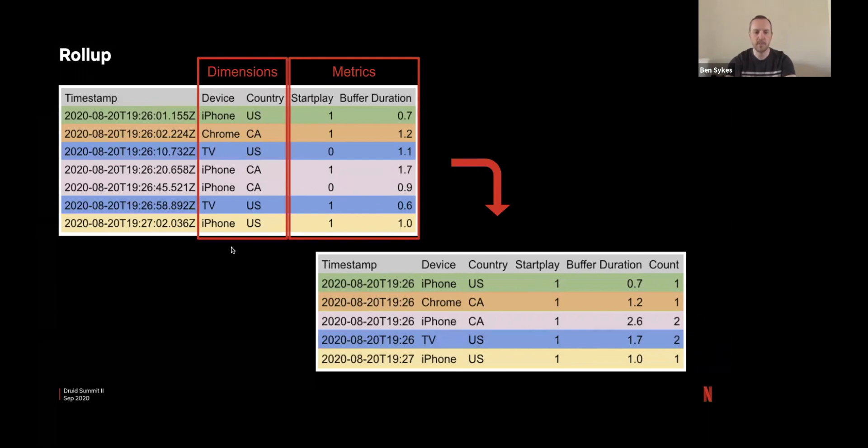In this example I've tried to color coordinate things that are similar. We have the blue rows here with identical dimensions TV and US, and they arrive in the same minute so they can be compressed. In this case we can add the metrics together into one row and we will increment the count.